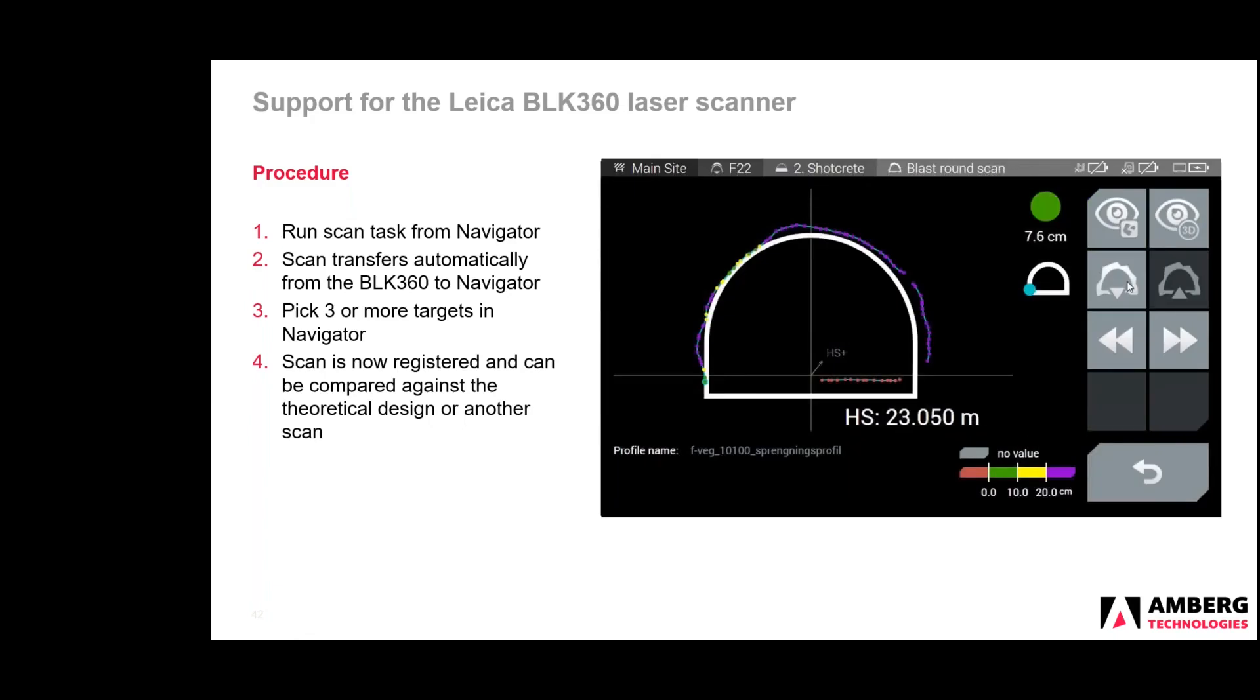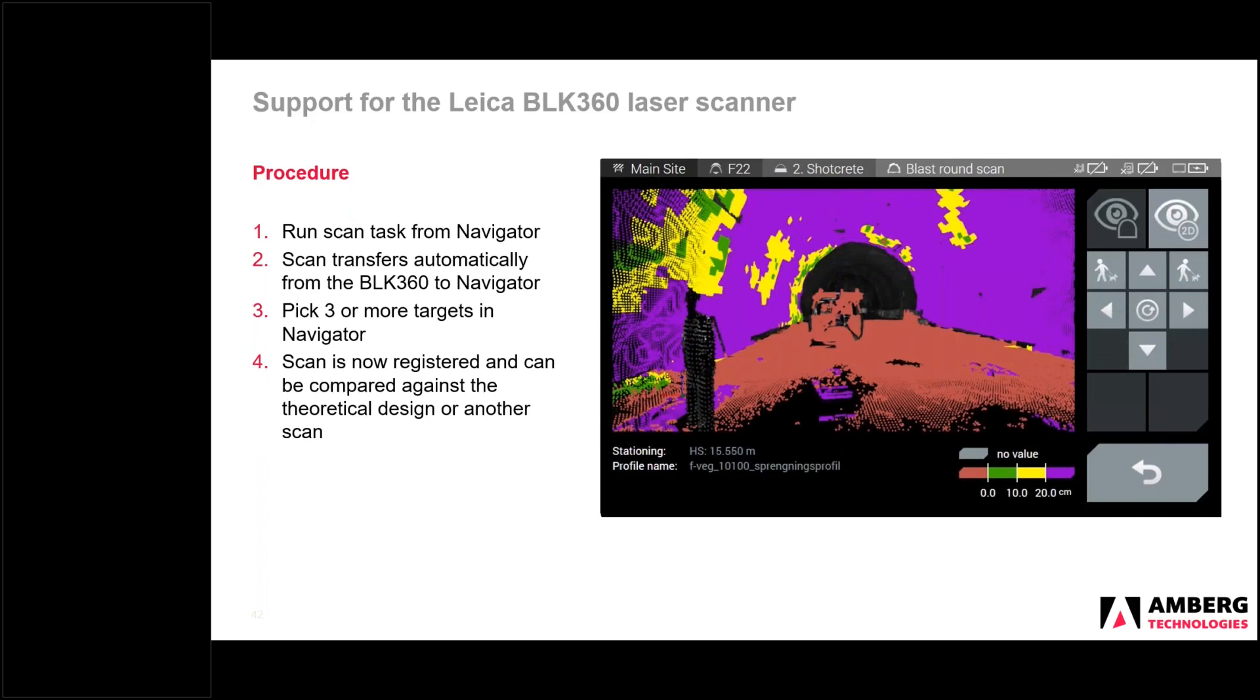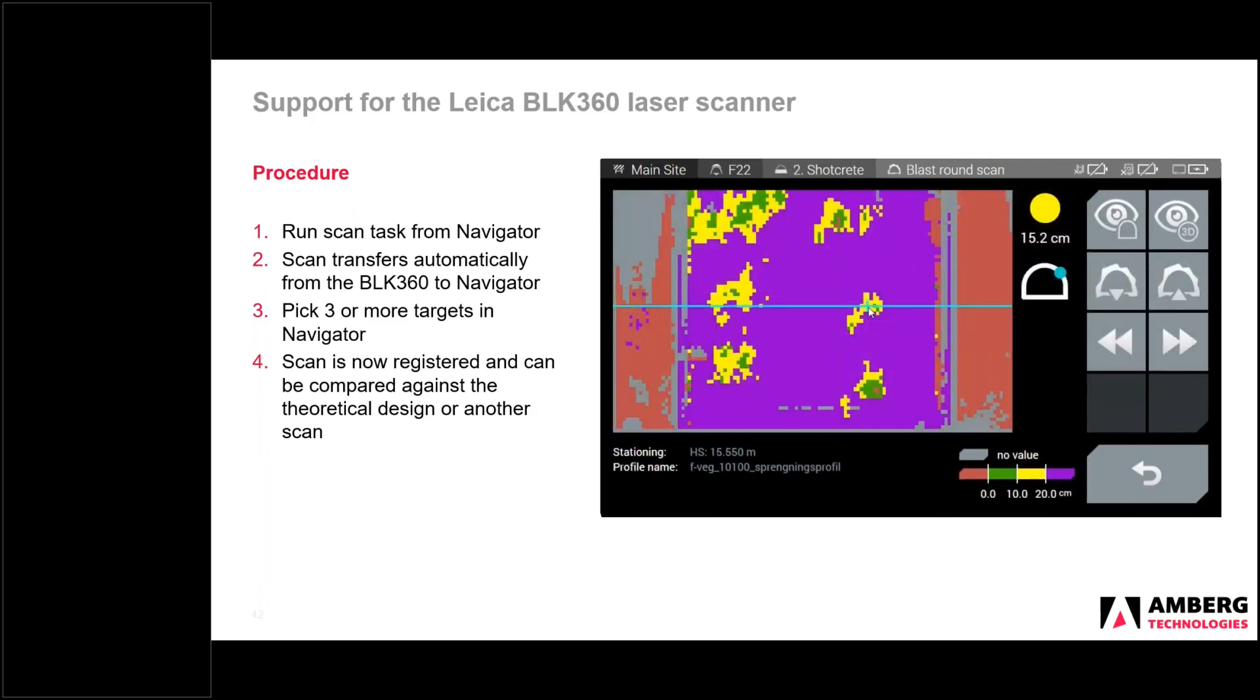So once you have picked the three or more targets, you can then do the infield or internal comparison to the design. Or yeah, so the usual, like what we have in our previous, with our previous scanners, you can view the data in the profile view, the 3D view, showing the deviations according to the color scale you specified. This is the top down view, the derolled or unrolled view of the tunnel as well. And once you transfer this data back to the office, again, either via the USB or via Navigator Cloud Sync, it will be available automatically in your project for creating further analysis.